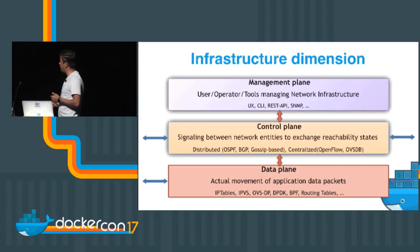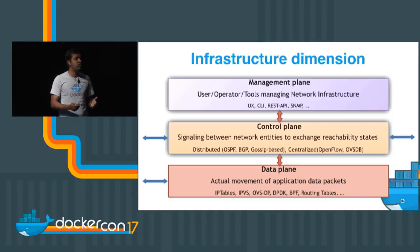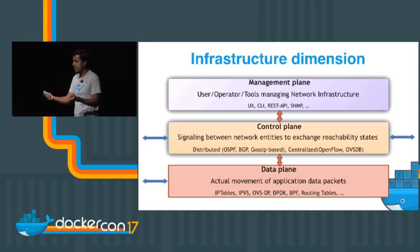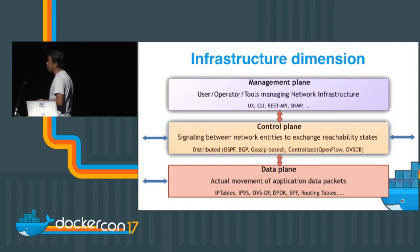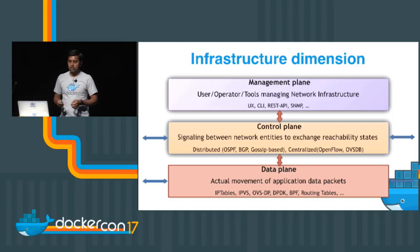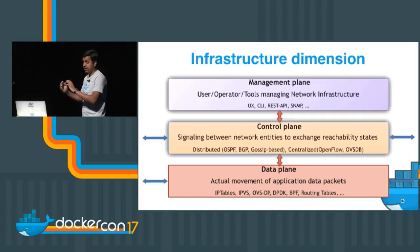Networks have the management plane, control plane, and data plane. The management plane refers to how we manage the network — how we operate it. When somebody creates a VLAN or a VXLAN, how do we manage it? Using UX, CLI, REST APIs, SNMP, and so on — all of that belongs to the management plane.